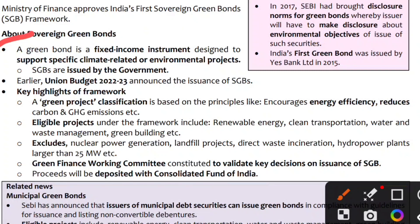We are going to support environmental and environment projects. This is the government's issue of Sovereign Green Bonds. In 2020, ESGs were mentioned. The key highlights are that green projects are classified as energy efficiency projects. Carbon greenhouse gas emissions are reduced, and the principles are based on that.